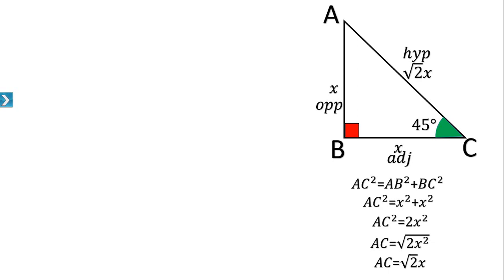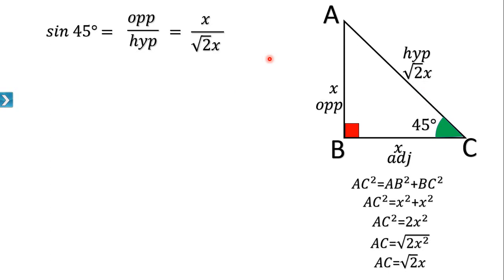The first trigonometric ratio is sin C. Since angle C is 45 degrees, sin 45° = opposite / hypotenuse. The opposite side is x and the hypotenuse is √2x. So sin 45° = x / √2x. The x's cancel, leaving 1/√2. Therefore sin 45° = 1/√2.